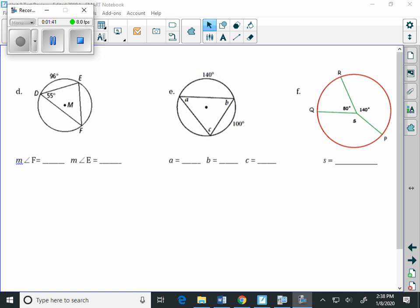Letter D. A couple things that we know in this particular problem is that angle D, or angle EDF, is an inscribed angle. So we can figure out how big arc EF is.